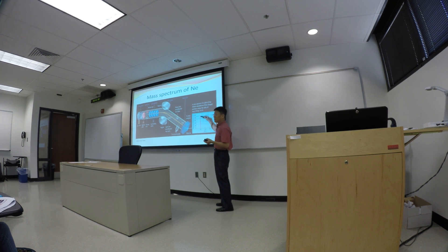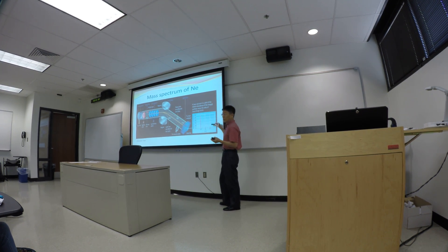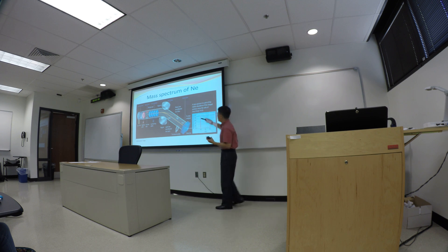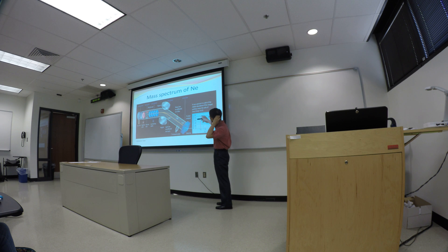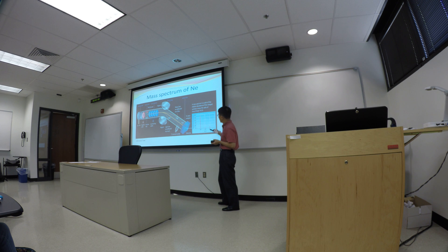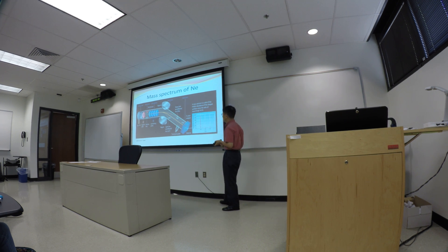Neon-20 will have the highest percentage. Neon-22 has the second highest percentage, and Neon-21 has the lowest percentage. That means naturally occurring Neon — the majority of it, close to 90% or even 95% — would be Neon-20. Then a small percentage is Neon-22, and an even smaller percentage would be Neon-21.